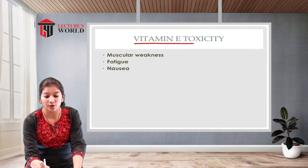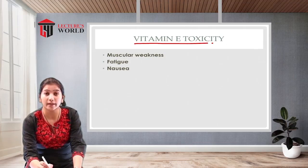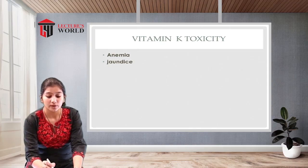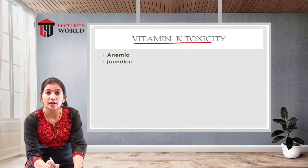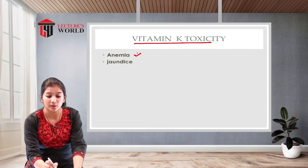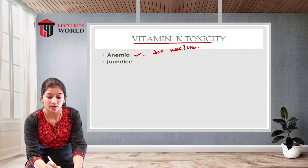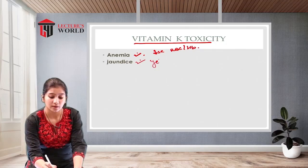Vitamin E toxicity may lead to muscular weakness, fatigue, and nausea. Vitamin K toxicity may lead to anemia — that is, a decrease in red blood cells or hemoglobin — and jaundice, which is yellowish discoloration of the skin.